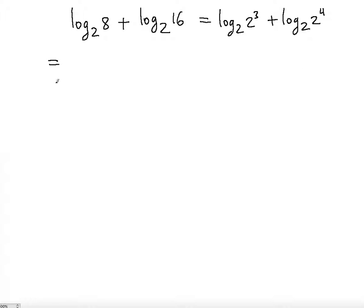So then we will have what? We know that the power comes down, right? The power rule for the logarithm makes sure that the 3 comes down as a constant before the logarithm. So it's going to be 3 log 2 with base 2. And then the same thing for the next one. 4 comes down as the power, then log 2 with base 2.